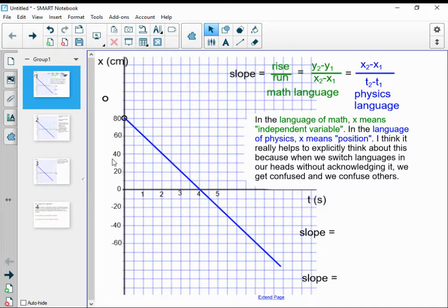This graph has two really simple points that I can choose. I'm starting here at zero seconds at 80 centimeters, and I'm crossing that time axis right at four seconds at zero centimeters. Those are two nice, easy numbers to use. Why not use simpler numbers if I'm calculating my slope?